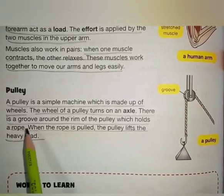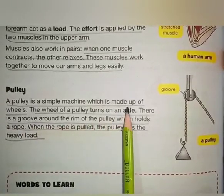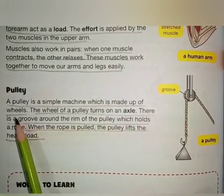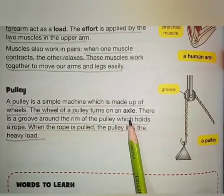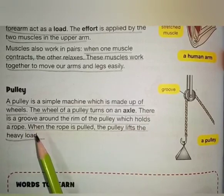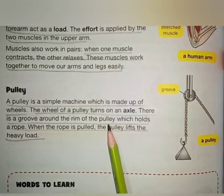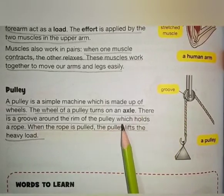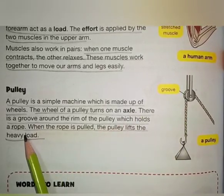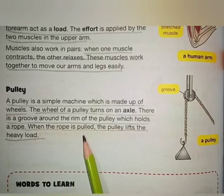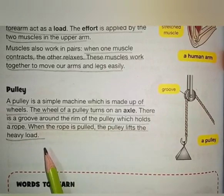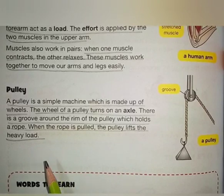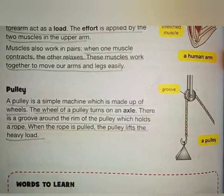A pulley is a simple machine which is made up of wheels. The wheel of a pulley turns on an axle. There is a groove around the rim of the pulley, which holds a rope. When the rope is pulled, the pulley lifts the heavy load. This is the end of your chapter — I hope your concept is clear. Take care of yourselves, Allah Hafiz.